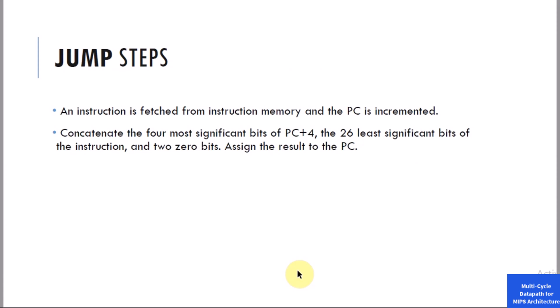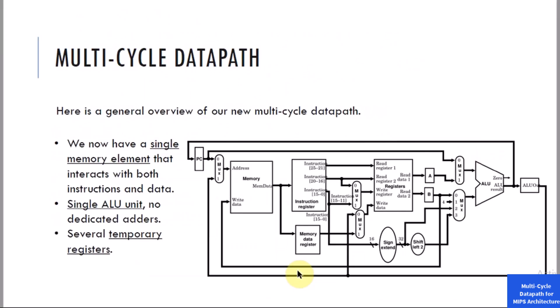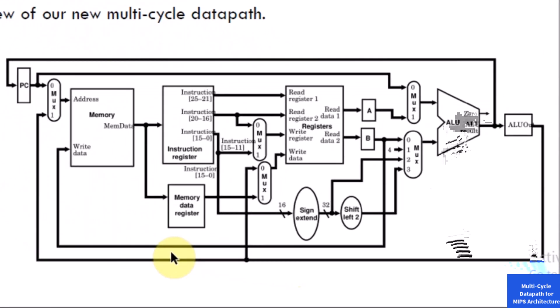For the branch-equal instruction, the steps are: fetch the instruction from memory and increment the program counter, read two source register values from the register file and sign-extend the 16 least significant bits of the instruction and left-shift it by 2. The ALU performs a subtraction on the register values. The value of the program counter plus 4 is added with the sign-extended left-shifted immediate value, resulting in the branch target address. The zero result from the ALU is used to decide which result updates the program counter. For the jump instruction, concatenate the 4 most significant bits of PC+4, the 26 least significant bits of the instruction, and two zero bits, assigning the result to the program counter.